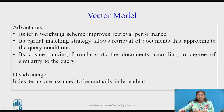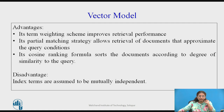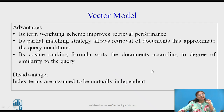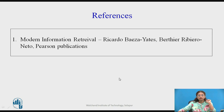What are the advantages of the vector model? It improves retrieval performance because there is partial matching — a partial matching strategy is allowed for documents that approximately match the query condition. The cosine formula gives you the sorting of documents according to the degree of similarity. The disadvantage is that index terms are assumed to be mutually independent — we have not considered any dependency of the keywords. This is how the vector model works.